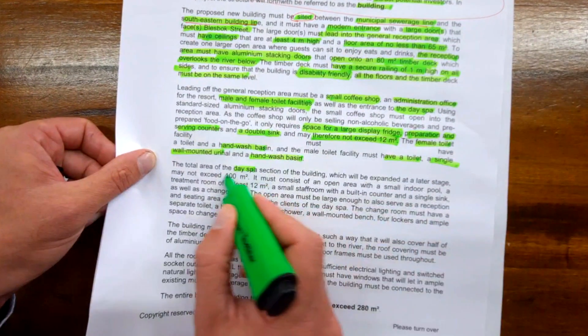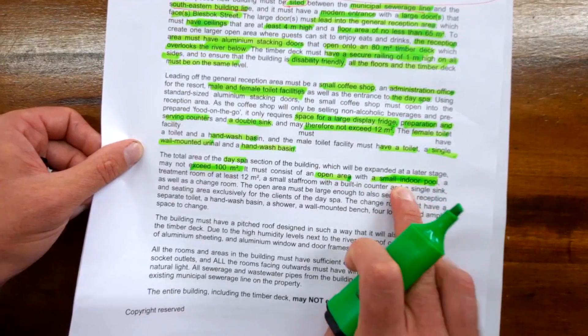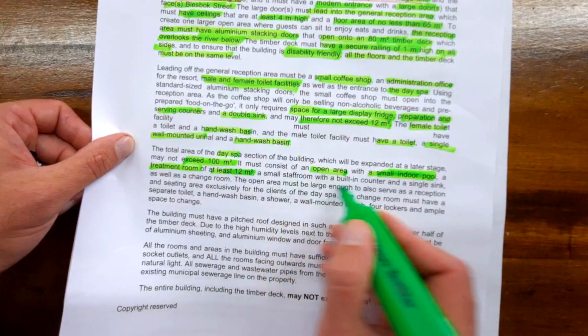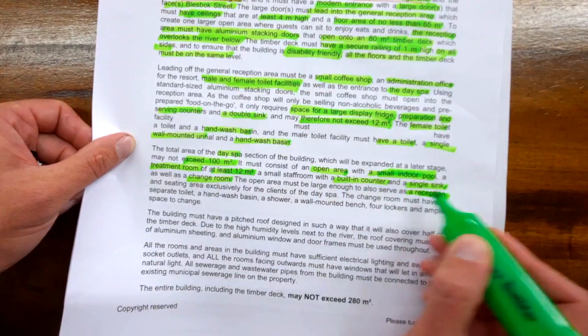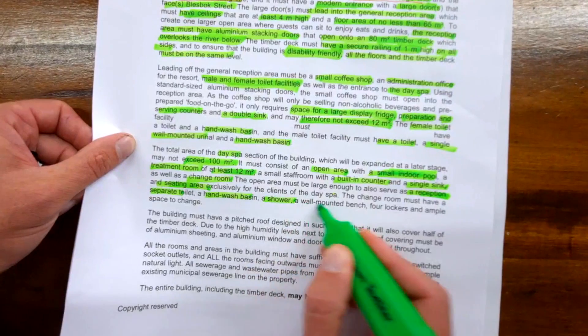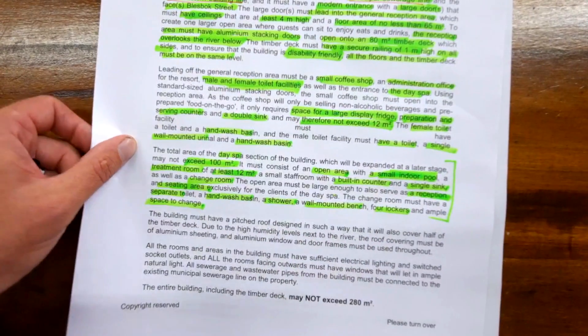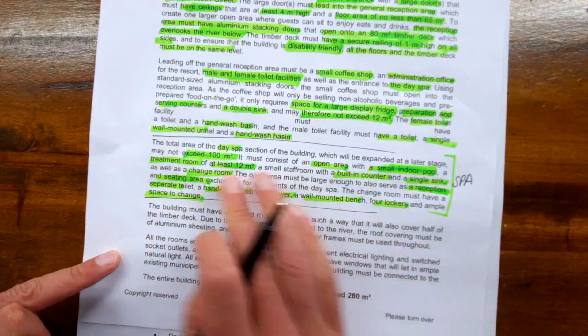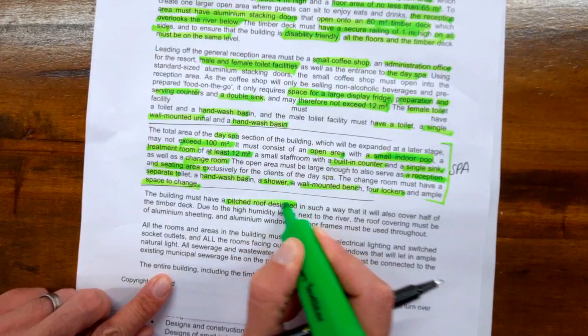The 12 square meters can be a constraint—it's a limit you cannot exceed. The female toilet must have a toilet, hand wash basin. Male toilet must have a toilet, single wall-mounted urinal, and hand wash. The total area of the day spa, which will be expanded at a later stage, may not exceed 100 square meters. It must consist of an open area with a small indoor pool, treatment room specified at 12 square meters, small staff room with built-in counter and single sink, and change room.